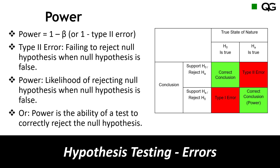1 minus Type 2 error is the power — the ability to find out that a change has occurred. Power is the likelihood of rejecting the null hypothesis when the null hypothesis is false. In the fire example, the null hypothesis is 'there is no fire'; when the house is actually on fire (null hypothesis is false), the power is the ability to correctly detect and reject that null hypothesis. This completes our discussion on Type 1 and Type 2 errors, alpha and beta.